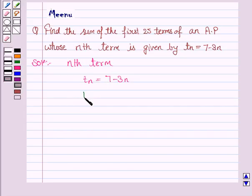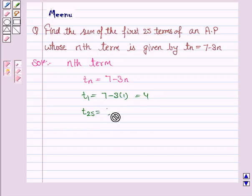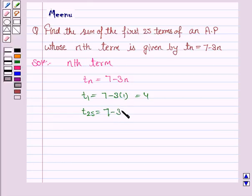So we can easily find out T1 by putting n equals 1 here. So it is 7 minus 3 into 1, that is 4. And T25 would be 7 minus 3 into 25, and this would be equal to 7 minus 75. So this is equal to minus 68.